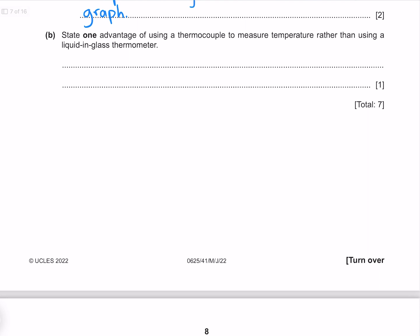State one advantage of using a thermocouple to measure temperature rather than using a liquid in glass thermometer. One advantage is that the output is electric, allowing it to be used within circuits.